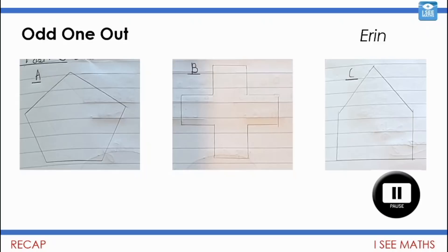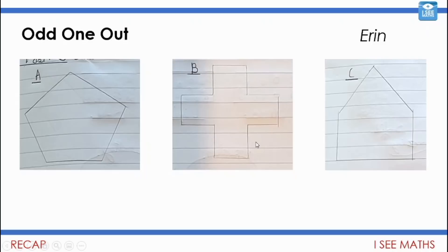Well I'll tell you what I went for. It could be shape A because all the angles are obtuse. It could be shape B because every line is one of a pair of parallel lines — this line is parallel to this one, this line is parallel to this one, and so on. Or actually it could be shape C because shape C's sides are different lengths, whereas all the sides are the same for shape A and for shape B. That's what I went for there.